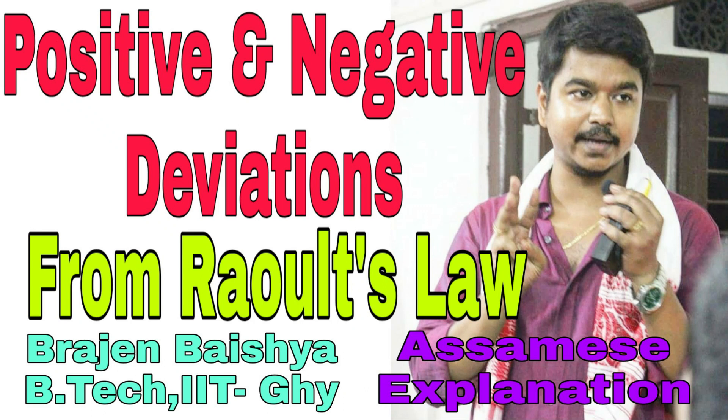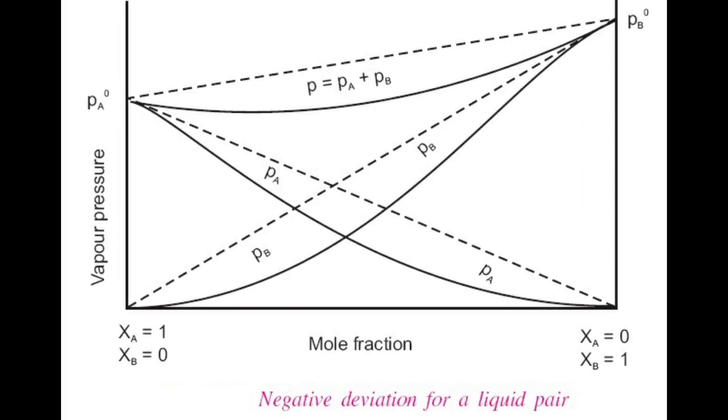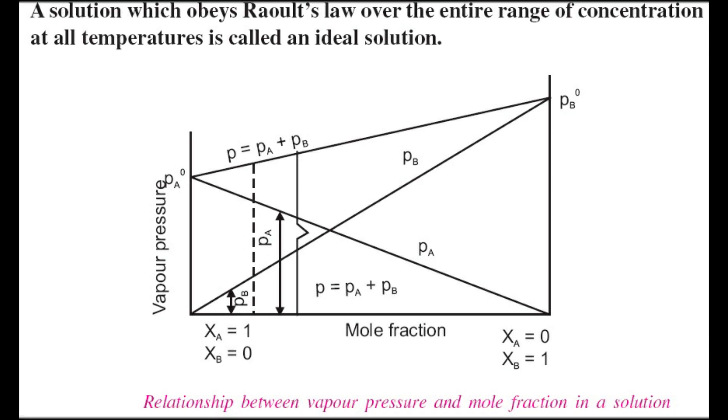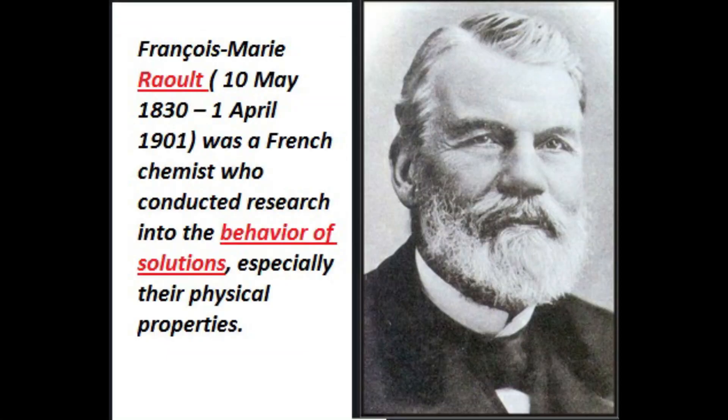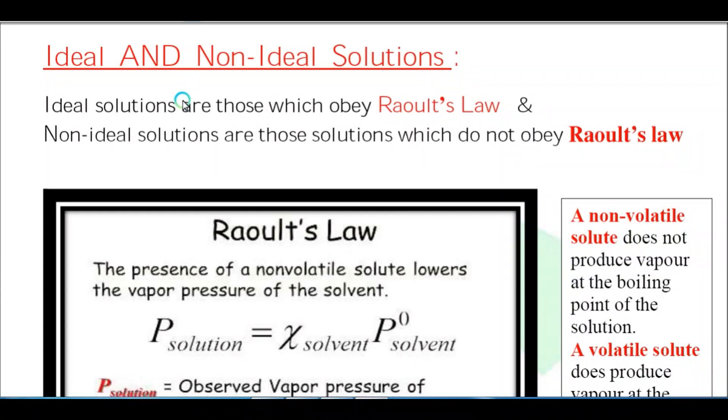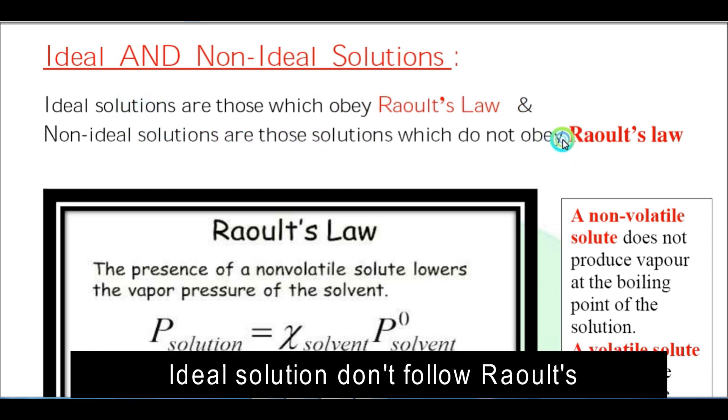Hello everyone, today we'll learn about positive and negative deviation from Raoult's law. I picked this topic from Class 12 chemistry. Before approaching the topic, we need to learn about ideal and non-ideal solutions. Ideal solutions always obey Raoult's law and non-ideal solutions do not obey Raoult's law.